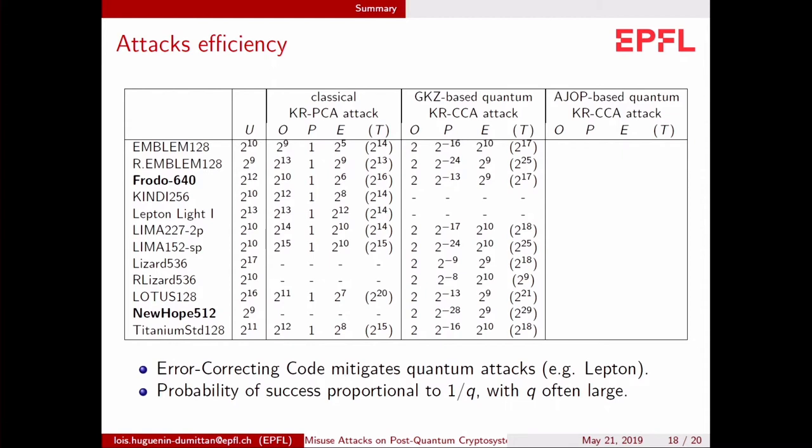Now the probability of success is proportional to one over q, with q often quite large. And that explains that the expected total number of queries is quite big, actually. And the results are not much better in this column than in the classical attack. But the intuition, the interpretation, is a bit different. Because here, with two oracle calls, we have a non-negligible probability to recover the secret key. Whereas in the classical attack, we always need to do thousands of queries to recover the key.